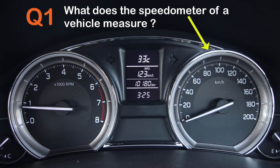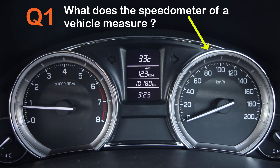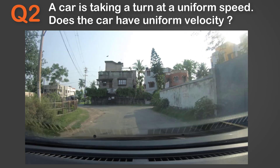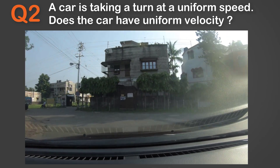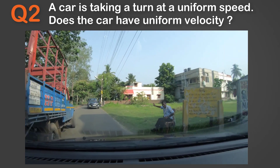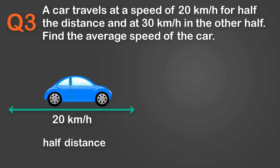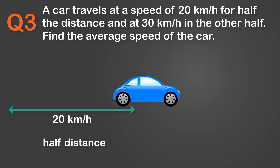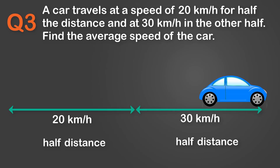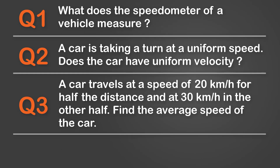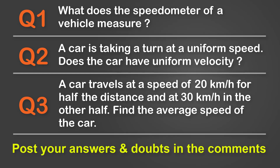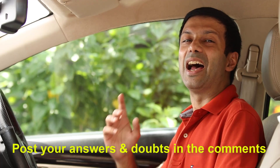Now we are done with the concepts. Are you ready to take a look at the top three questions on this topic? Question 1: What does the speedometer of a vehicle measure? Question 2: A car is taking a turn at a uniform speed — does the car have uniform velocity? Question 3: A car travels at a speed of 20 kilometers per hour for half the distance and at 30 kilometers per hour for the other half. Find the average speed of the car. Try solving these questions and write your answers and doubts in the comments below, and I promise to answer your doubts as soon as possible.